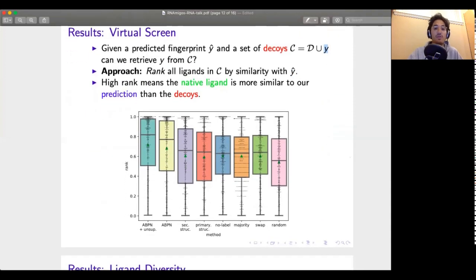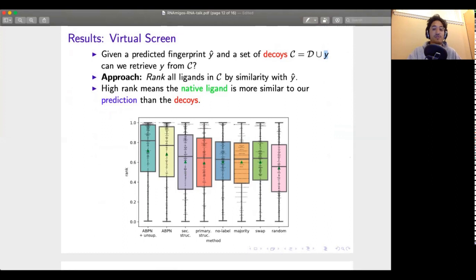The idea of a virtual screen is that it tells us how useful our predicted fingerprints are in kind of a real world setting. So we predict a fingerprint y hat and we build a set of decoys, a set of ligands that we assume don't bind our given binding site, and we add to it y which is the active compound that does. It's kind of like a needle in a haystack problem. We ask can we retrieve the true binder in this haystack using our predicted fingerprint. The way we do that is we rank all the ligands in our decoy set by similarity to our prediction and if the most similar ligand to our prediction happens to be the true ligand y then we did a good job, we got a high rank and have a score close to one. If not we have a score close to zero. On average something random is doing a score of 0.5.